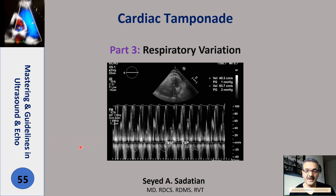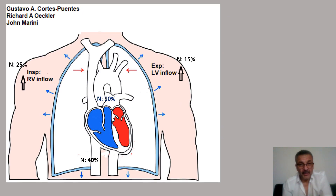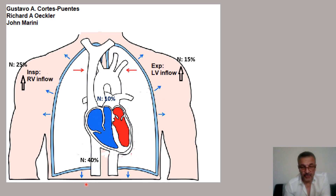Welcome to Mastering Guidelines in Ultrasound and Echo. First, let's see what respiratory variation is. During inhale or inspiration, the chest expands and the diaphragm pushes down, creating a negative pressure inside the thorax or chest. When the negative pressure increases, blood is sucked in from the superior vena cava.